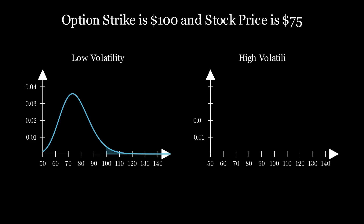We can see here that the same option with a strike of 100 and a current stock price of 75 will be priced higher when its volatility is higher, since it has a greater chance of finishing above 100. This is represented by a larger area under the curve.